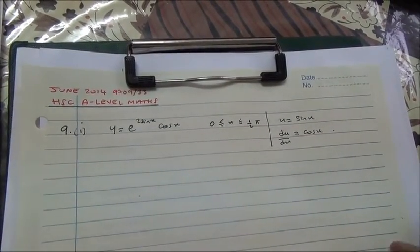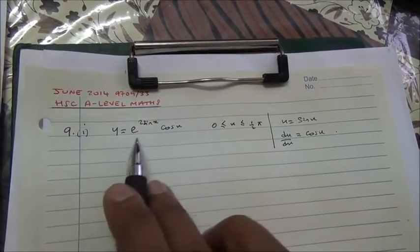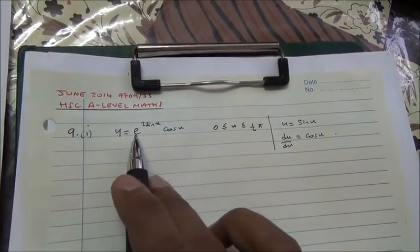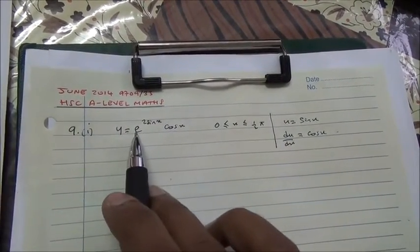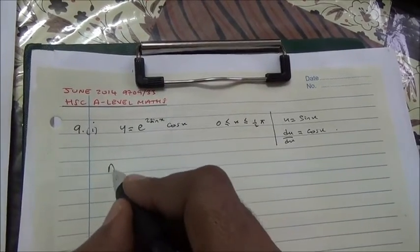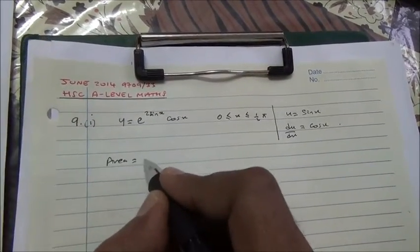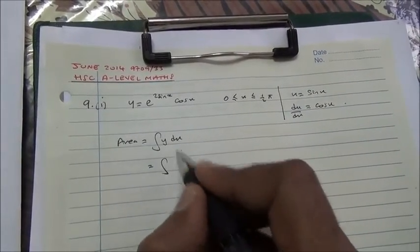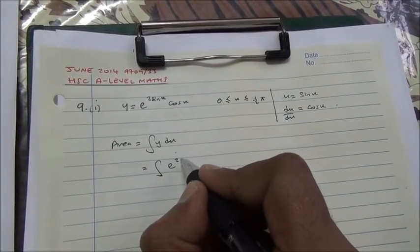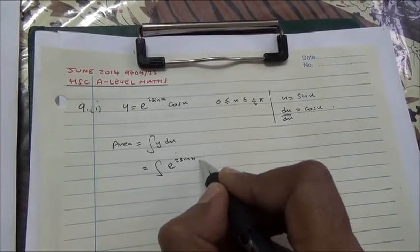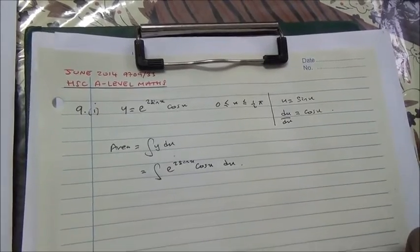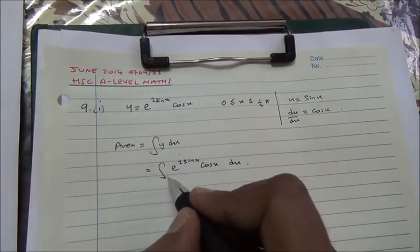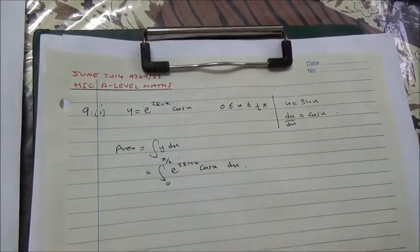We need to find the new limits and set up the integral. Area equals the integral of y dx, which is the integral of e to the 2 sin x times cos x dx, with limits from 0 to π/2.